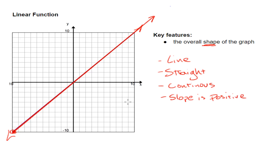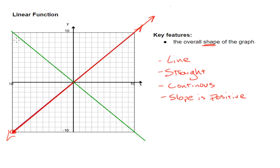Now wait a minute. Does that mean that all linear graphs have a positive slope? No, it doesn't. Because if I have this flipped like this and I start on the left side, I am then going down. So some of my graphs that are linear can be going down, some of them can be going up. This one happens to be going up.